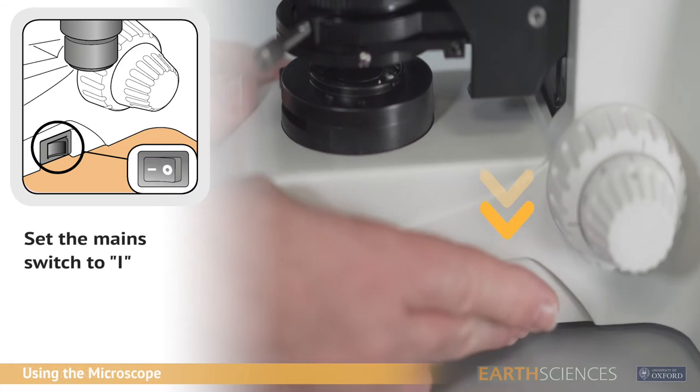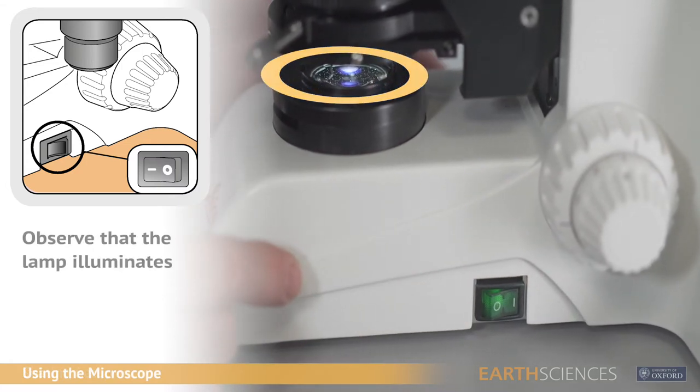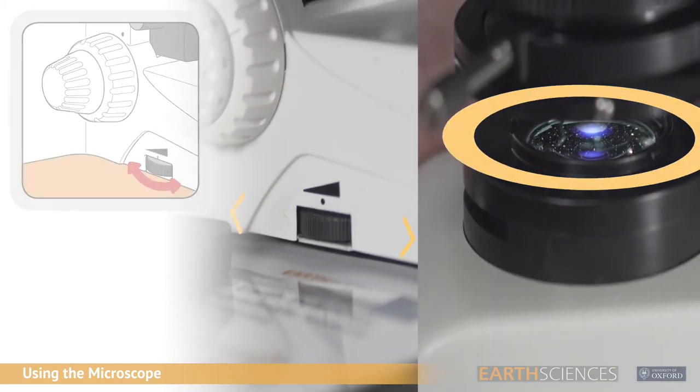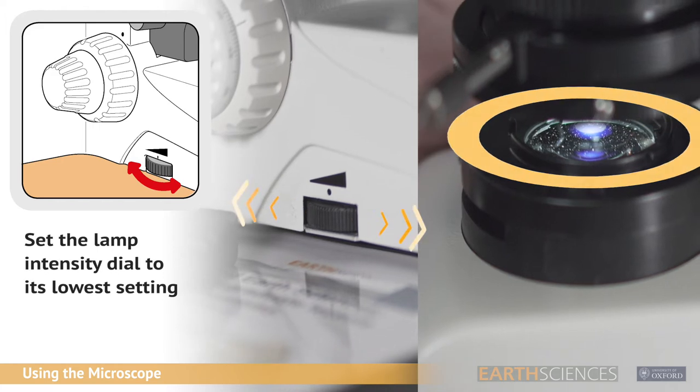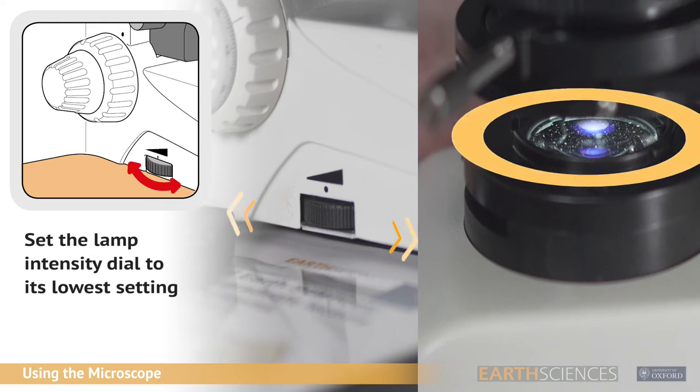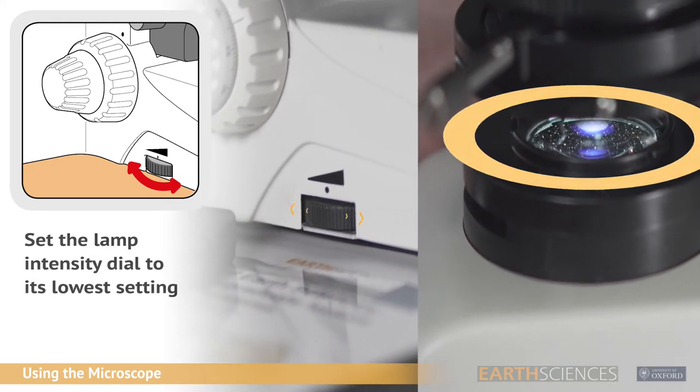On the right hand side of the base is the mains switch. Zero is off, one is on and will be illuminated. On the left hand side is the lamp intensity dial. It's good practice to leave the dial rotated to the lowest light intensity to protect the user's eyes before viewing.